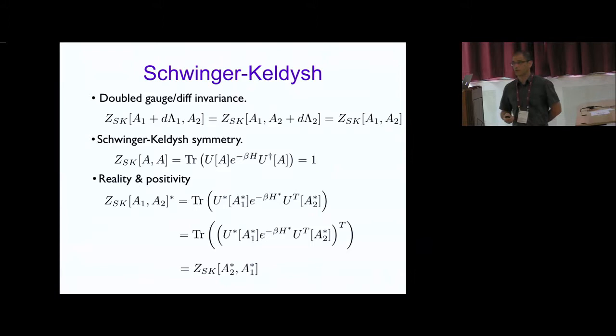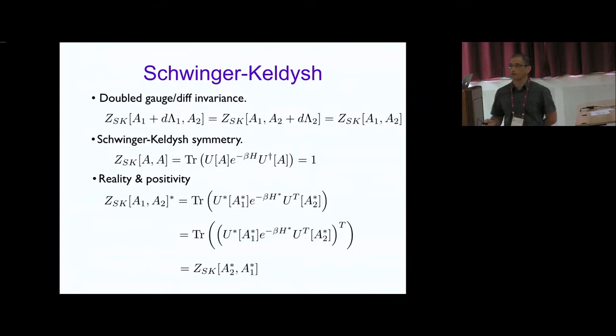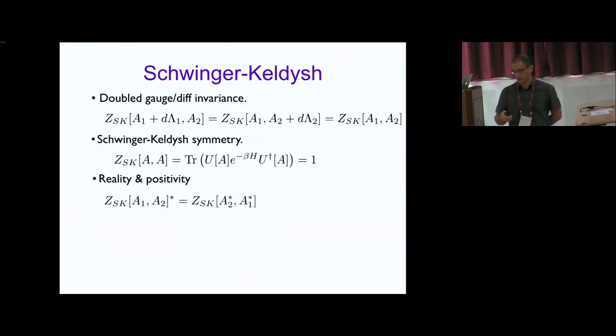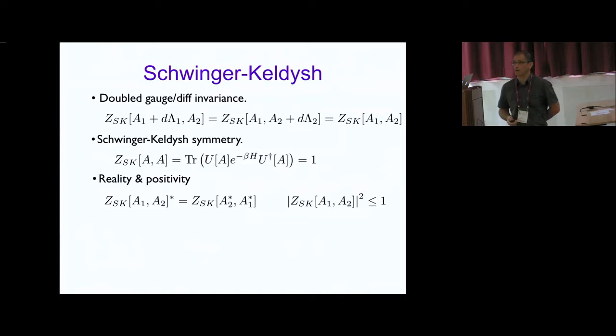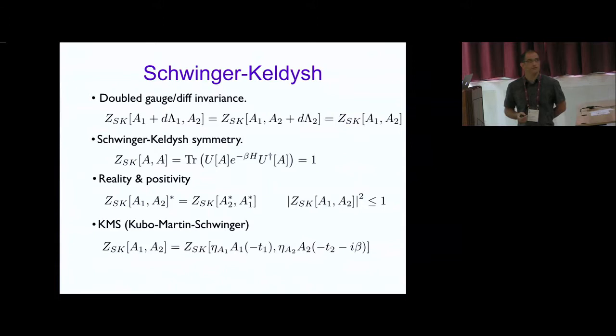For the vacuum generating function, the generating function should be real. In Schwinger-Keldish theory it's not necessarily real but should satisfy this relation — complex conjugation swaps the two sources. There is also a simple way to show that the absolute value of this generating function is bounded. The last condition is something called KMS symmetry, related to the KMS symmetry of two-point functions. Here η_{A1} is the CPT eigenvalue of the operator associated with source A₁, β is the inverse temperature, and the minus sign has to do with using CPT to get this equality.